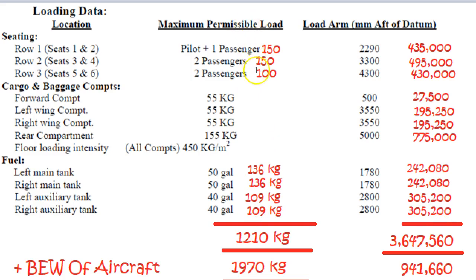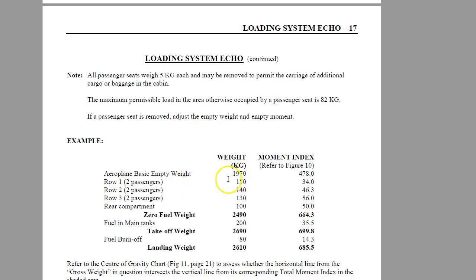Now let's add up all our weights. We get a total of 1,210 — that's just for these items. We then have to add in the basic empty weight of the aircraft, which is 1,970 kilos. So we add all those up, which gives us that total. We add the basic empty weight of the aircraft and the moment for it: 1,970 kilos times the moment arm for the aircraft, and it gives us that. We get that from the echo loading chart — 1,970 times 4.78.